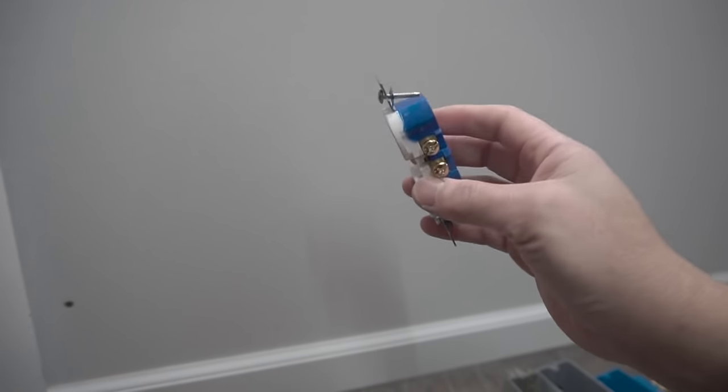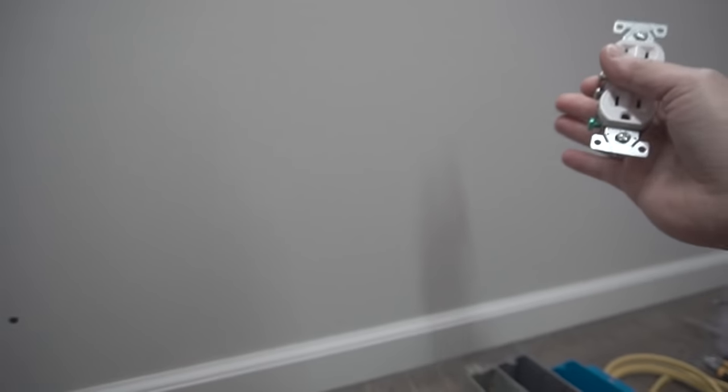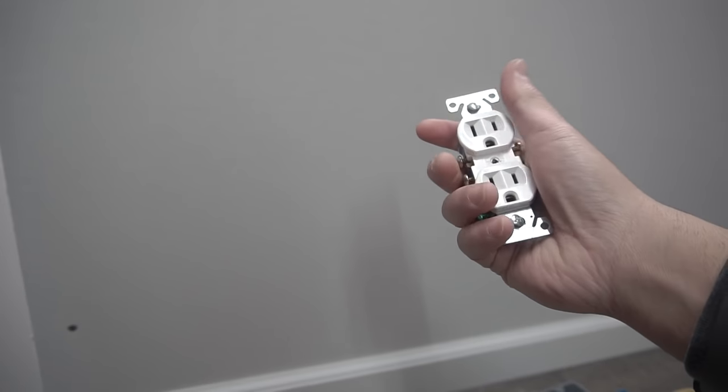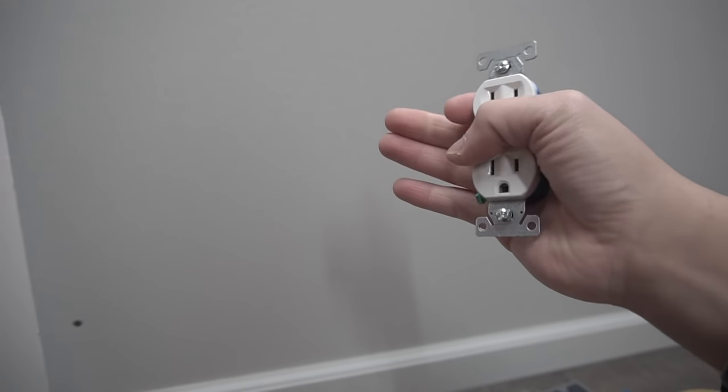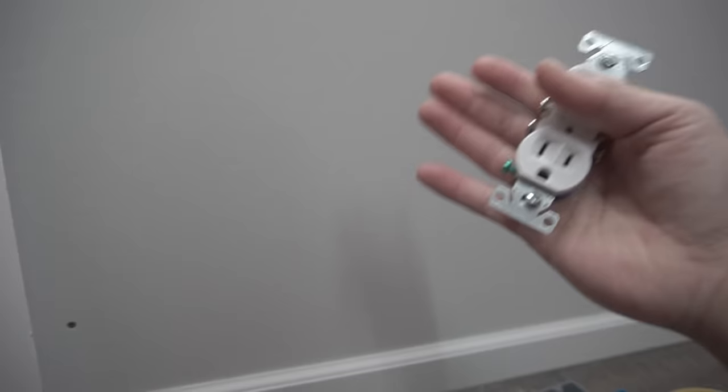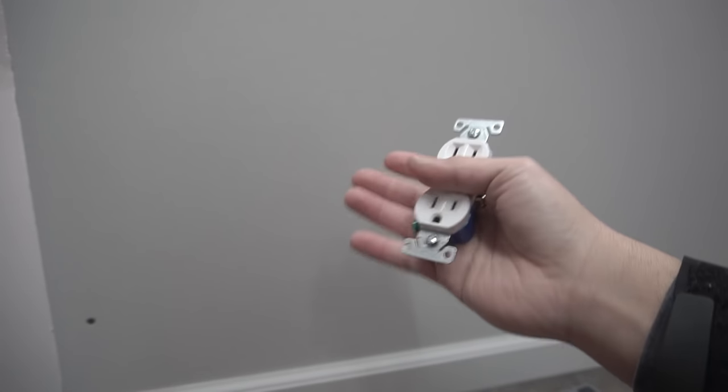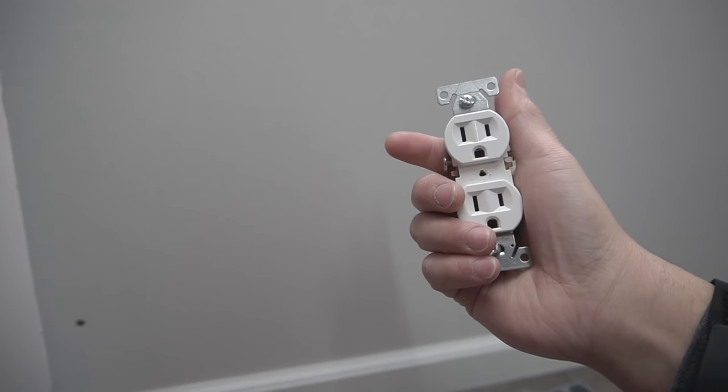So you want to install a brand new electrical outlet on your wall. First, figure out the location. Behind this drywall are studs at 16-inch centers. Today we're installing an outlet on existing drywall, though it's easier with exposed studs before drywall installation.